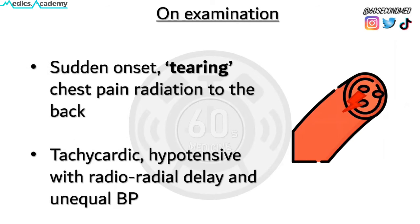Patients usually describe a sudden onset chest pain which is tearing in character and radiates to the back. Patients are usually tachycardic, hypotensive, and some may present with radio-radial delay and unequal blood pressures.